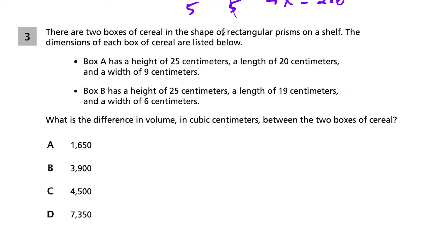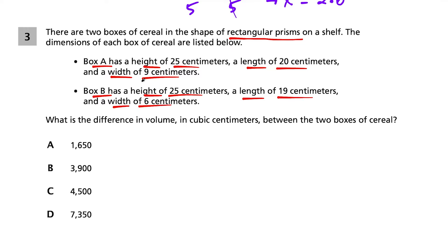Question 3: we have 2 boxes of cereal shaped like rectangular prisms. Box A has a height of 25 cm, length of 20 cm, and width of 9 cm. Box B has a height of 25 cm, length of 19 cm, and width of 6 cm. We want the difference in volume in cubic centimeters. The volume of a rectangular prism is length times width times height. So the volume of box A equals 20 times 9 times 25.